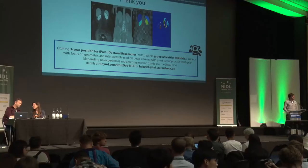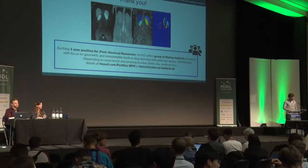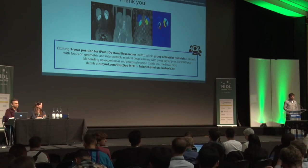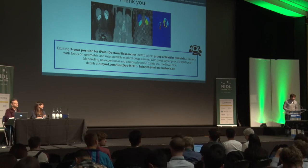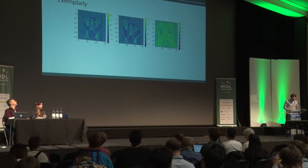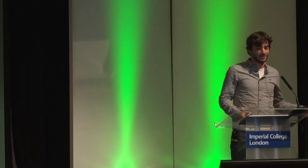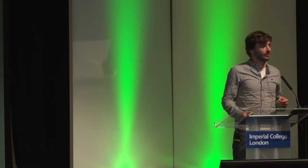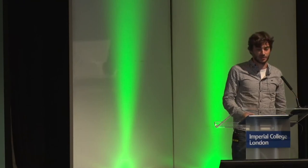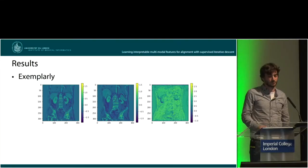Question: In your title you say you learn interpretable features — what exactly do you mean by interpretable? Answer: You can see exemplary results from the feature CNNs. Basically what you can see are gradient filters at the borders of certain structures.